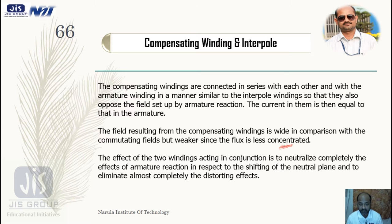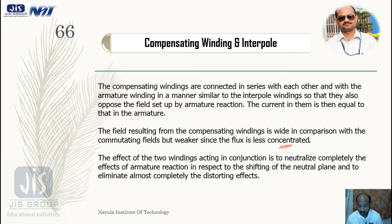For larger machines, to completely nullify the cross-magnetizing effect of armature reaction, we use simultaneously compensating winding as well as commutating poles — interpoles. This compensating winding MMF neutralizes the armature MMF only under the pole faces, because the compensating winding is connected there. It is connected in series with the armature winding so that the compensating MMF and armature MMF oppose each other.